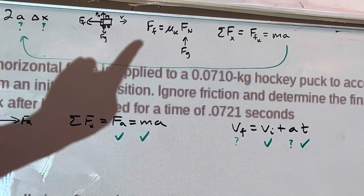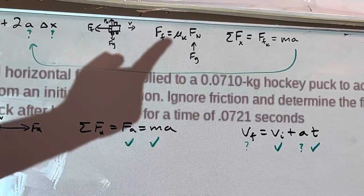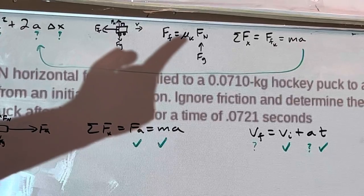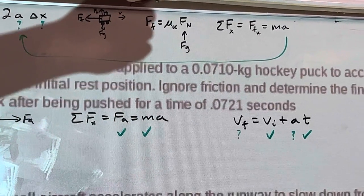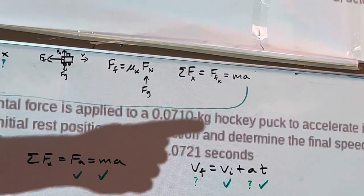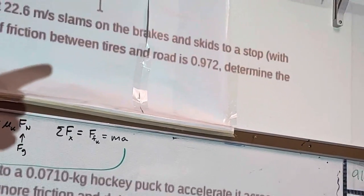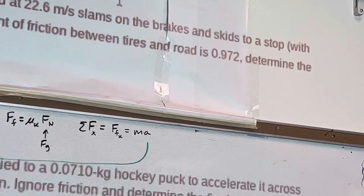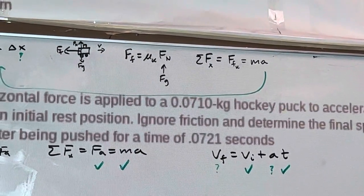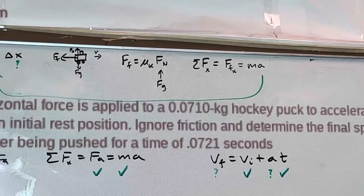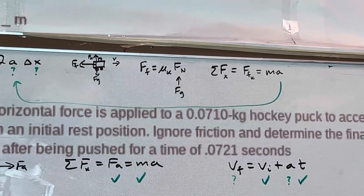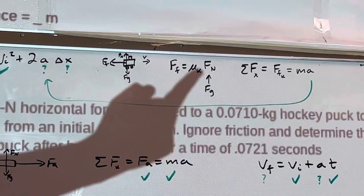We know an equation for friction. Equation for friction is mu times the normal force. And we know the mu, the coefficient. Where is it? There it is over there, 0.972. So we know that. So since we know that, we know this. Do we know the normal force?